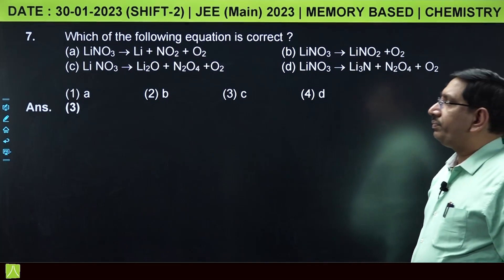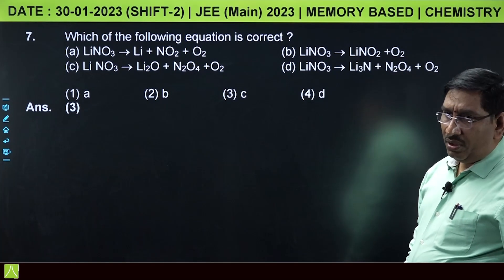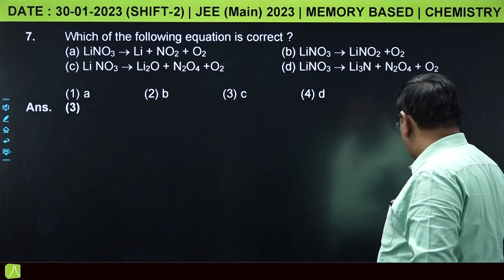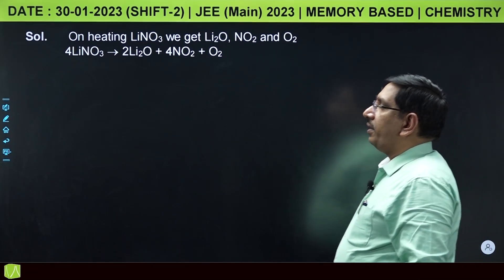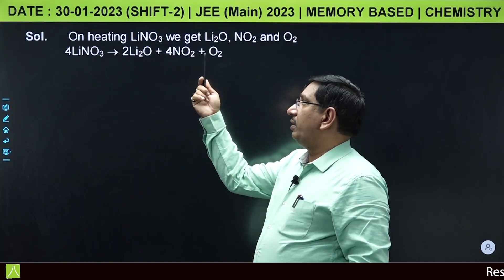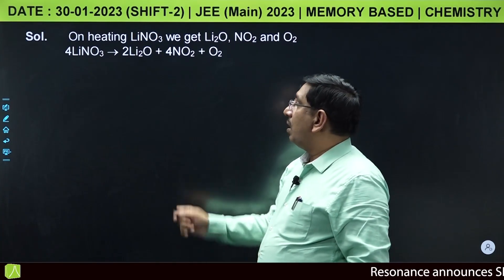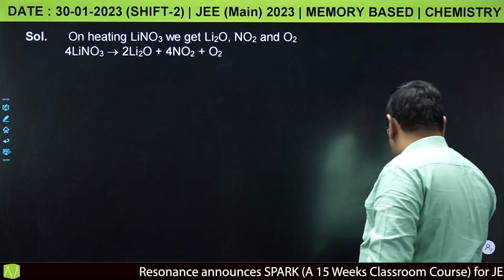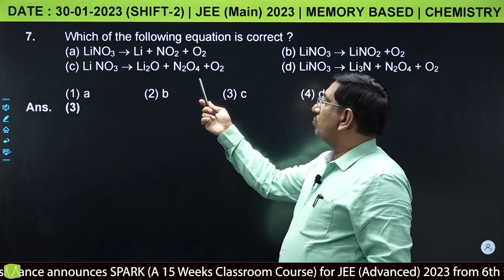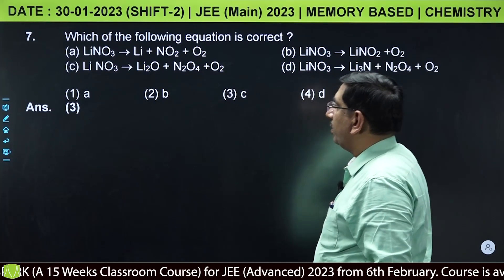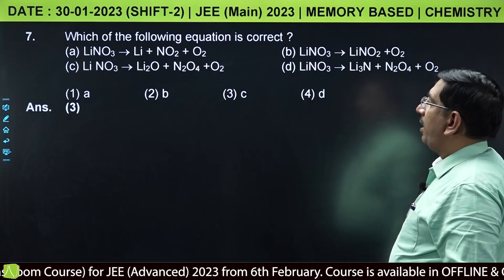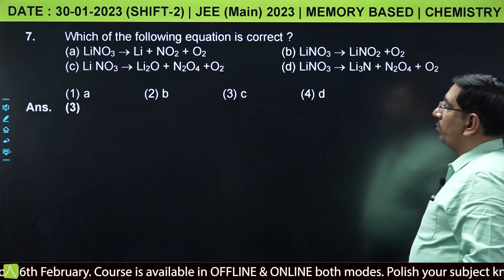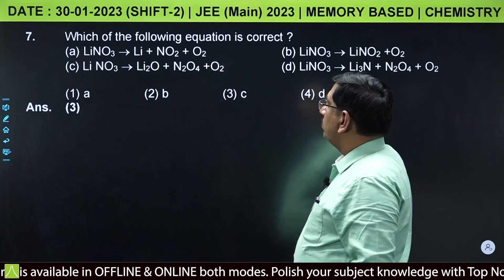Next, which of the following equation is correct? This also appeared in the value session. Lithium nitrate on heating produces lithium oxide, nitrogen dioxide, and oxygen. N2O4 can also form by dimerization. Among the given reactions, both A and C are correct options.